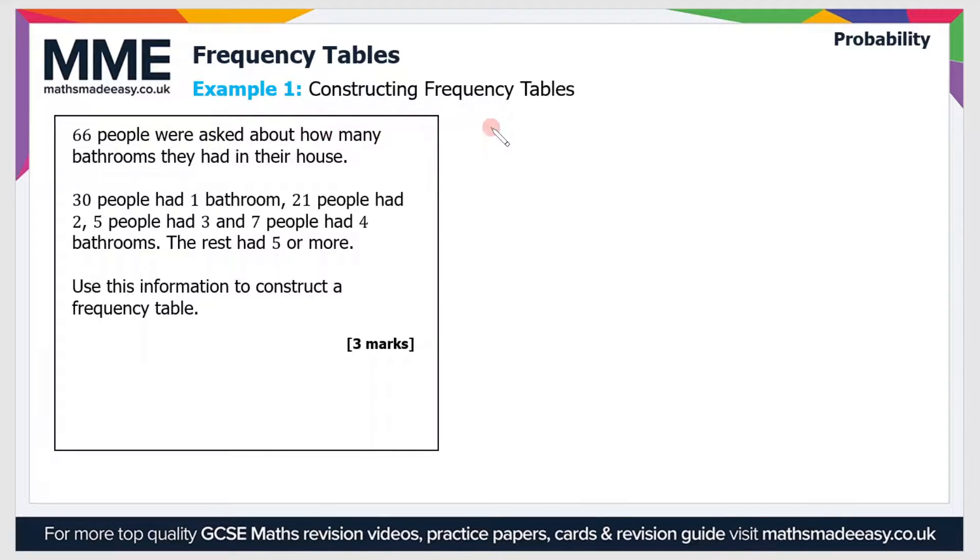Example 1 is constructing a frequency table. 66 people were asked about how many bathrooms they had in their house. 30 people had 1 bathroom, 21 people had 2, 5 people had 3, and 7 people had 4 bathrooms. The rest had 5 or more. Use this information to construct a frequency table.